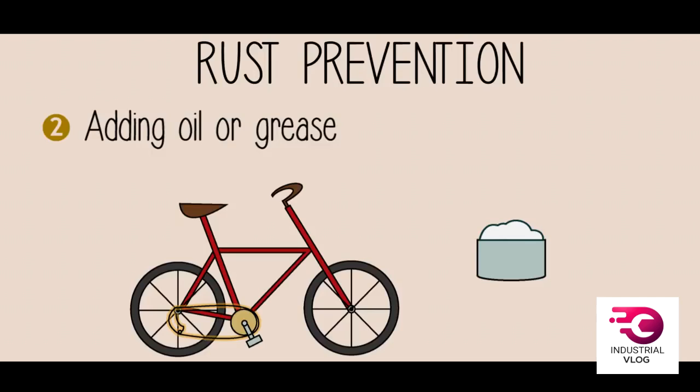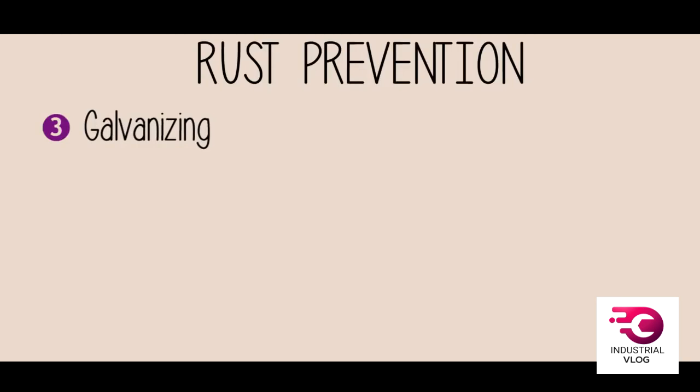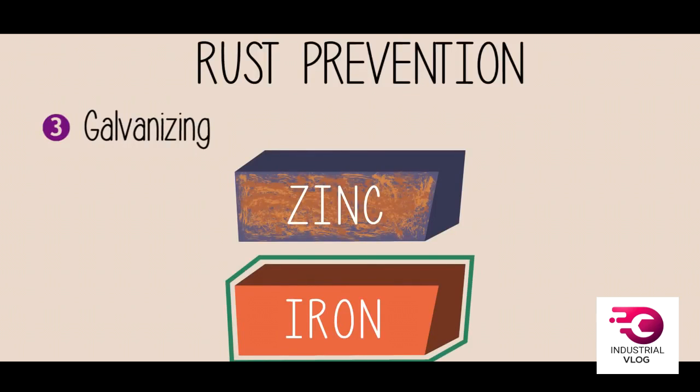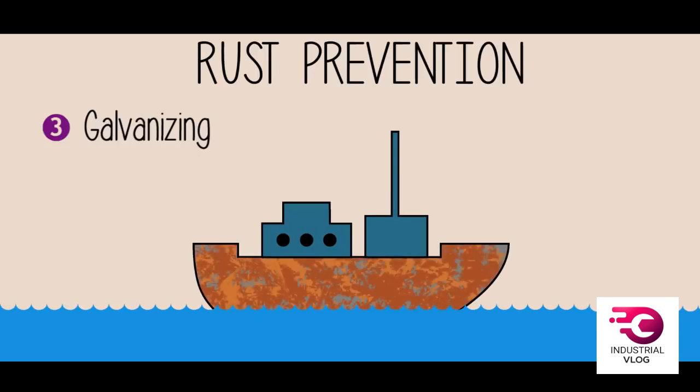Another way to prevent rusting is a sacrificial protection method called galvanizing. Have a look at this reactivity table. Zinc is more reactive than iron. When exposed to oxygen and moisture, zinc will corrode faster than iron. So if we put them together, zinc protects iron but is sacrificing itself, hence the term sacrificial protection. This method is applied to prevent rusting on ships.